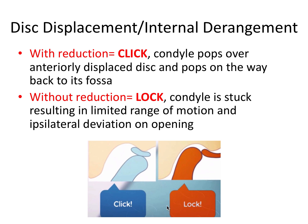Disc displacement without reduction means the condyle is locked in place — stuck behind the anteriorly displaced disc — resulting in limited range of motion. If only one TMJ is affected, there is an ipsilateral deviation on opening, because the condyle on that side can no longer translate down the articular eminence. On the board exam: with reduction equals clicking; without reduction equals locked in place.